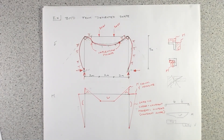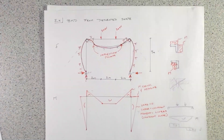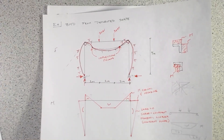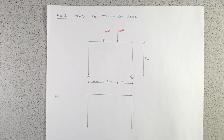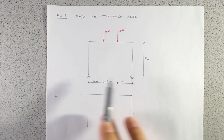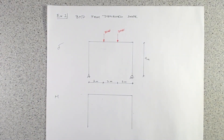Now let's look at one more structure — very similar, but this time we have a pin and a roller instead of two pins. We've already done the shear and bending moment diagrams for this in a previous video using equations. To find the deflected shape, the important question is: where do we have zero deflection? The only place we have zero deflection is at the pin.